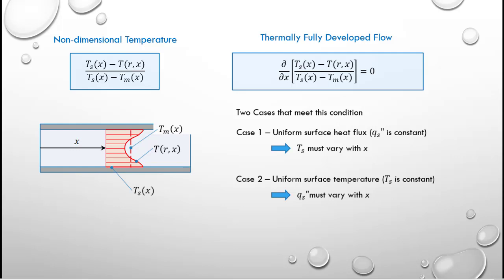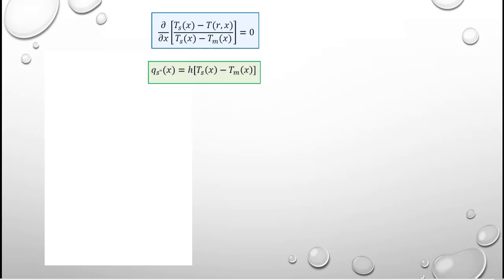Now if we take the requirement of thermally fully developed flow and combine that with Newton's law of cooling as it is applied to convective heat transfer within a tube, where the temperature difference is defined as T_s minus the mean temperature at any given X location, the combination of those two will yield a result.